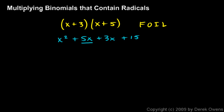In this case — not in every case, but in this case — two of the terms can be combined, and we get x squared plus 8x plus 15 for our simplified answer. That technique of FOIL will still work even if the binomials that we're multiplying contain radicals.